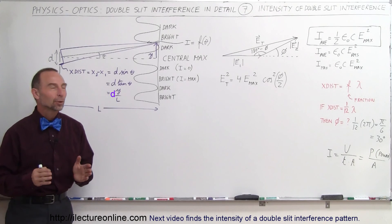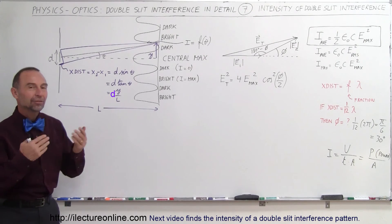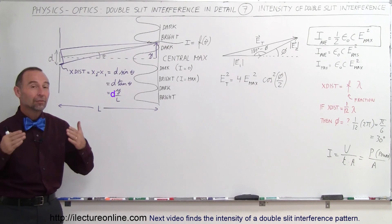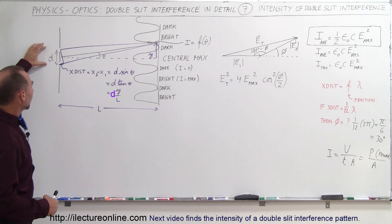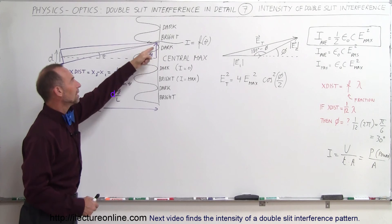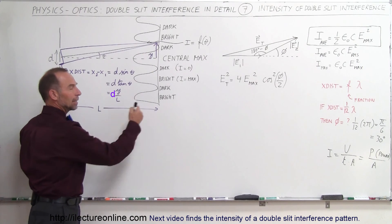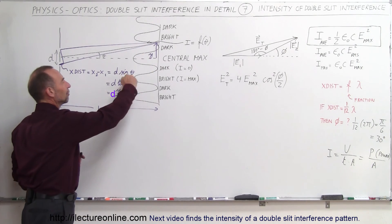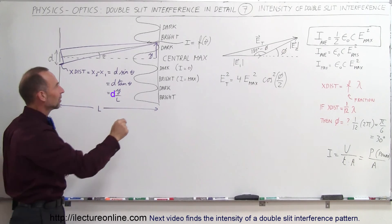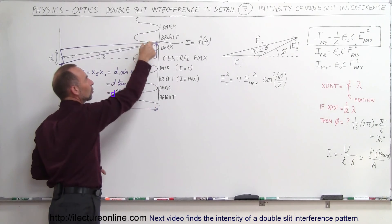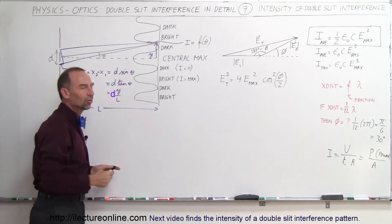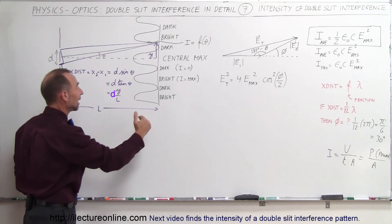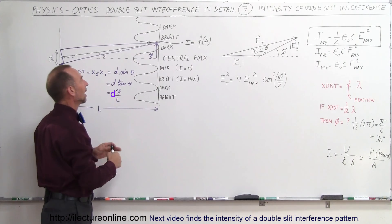Welcome to ElectronLine, and here we're going to put it all together in our attempt to find the intensity of a double-slit interference pattern. Light is coming down through two slits; the slits are distance d apart. Because we're looking at the screen a far distance away equal to L, we see an interference pattern and we're trying to find the intensity of the light anywhere along that screen as a function of theta.